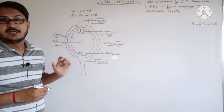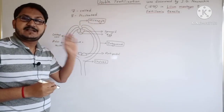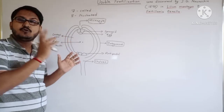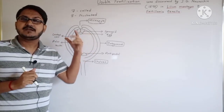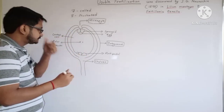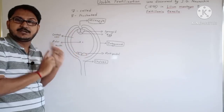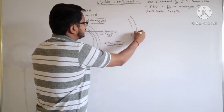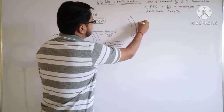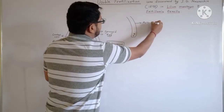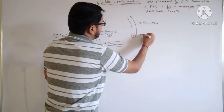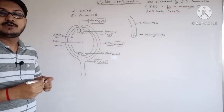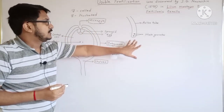Now, as we said double fertilization, that means there will be two fertilization events. In angiosperms, we have two male gametes. We know that the male gametes are carried by the pollen tube, so the pollen tube carries the two male gametes.